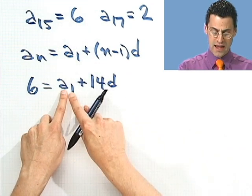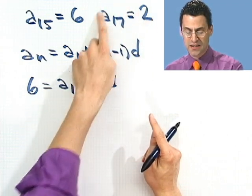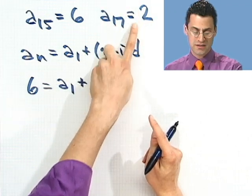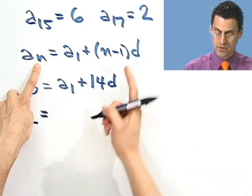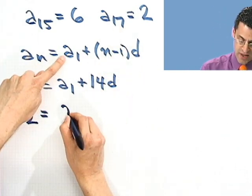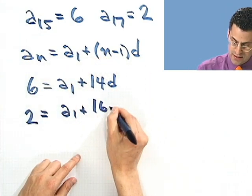So there's a fact, but I don't know what a1 is or d is. Those are still unknowns. But I know this fact. I know that a17 equals 2. So that means that this thing will be 2 when n equals 17. So that means that equals a1 plus, and now I put in a 17 minus 1, which is 16d.